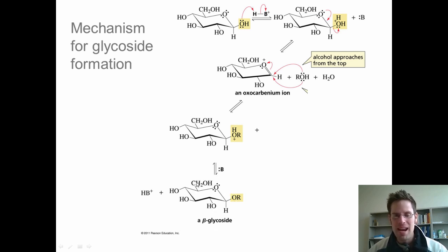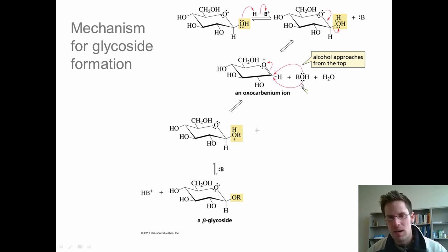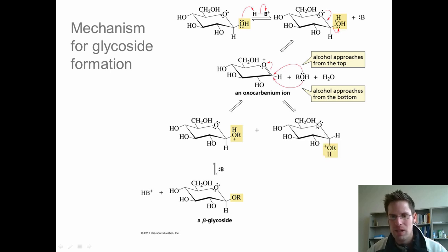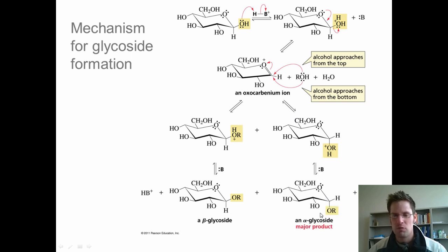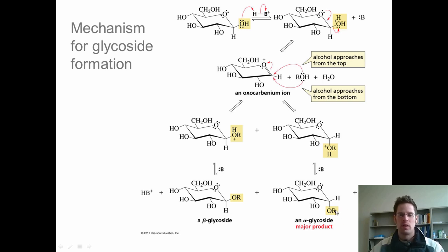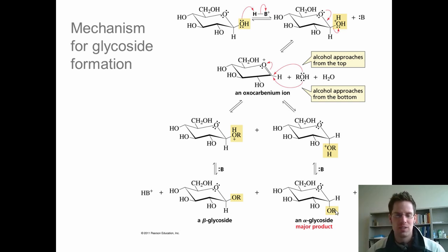The beta anomer is where these two groups are cis to each other. The alcohol coming in from underneath forms the alpha-glycoside after deprotonation. Alpha-glycosides are the major product, even though they have an axial OR group instead of an equatorial. This is caused by something called the anomeric effect.